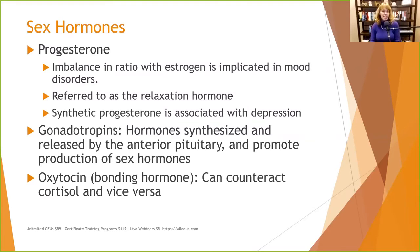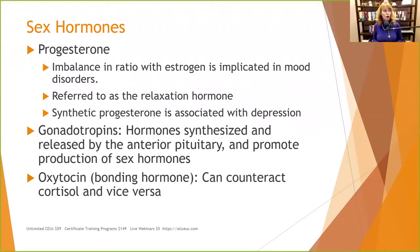Gonadotropins, hormones released by the anterior pituitary, promote sex hormone production. When we're under stress, cortisol suppresses this production. Connecting it all: chronic stress leads to insufficient estrogen production, which is why many women under high stress have erratic cycles. In both men and women, when sex hormones aren't being produced because the body is focused on fight-or-flight, the availability of serotonin, norepinephrine, and dopamine becomes reduced. Chronic stress can alter sex hormones, which then alter neurotransmitter availability.